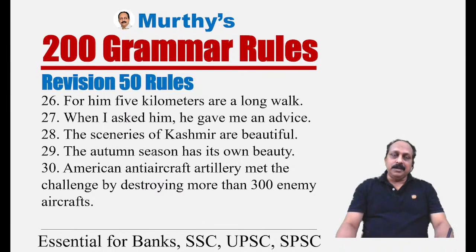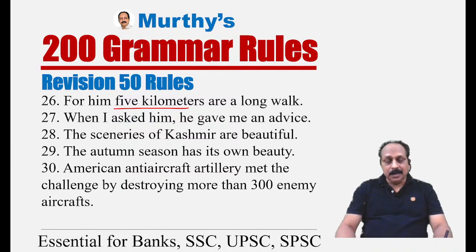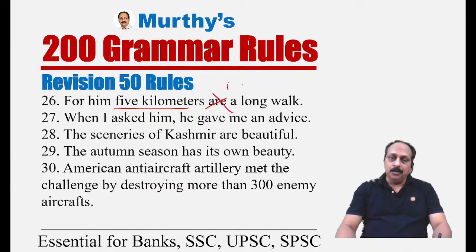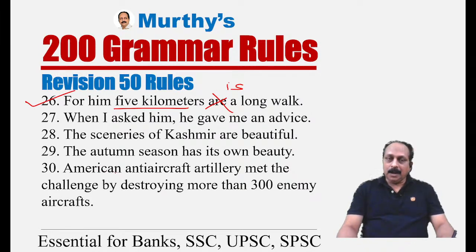Sentence twenty-six: 'For him, five kilometers is a long walk.' When certain nouns — though in plural form — relate to distance, weight, or currency, they are considered a single whole unit. Based on that, they take a singular verb. 'Five kilometers' is considered one unit, so 'is' is correct, not 'are.' Similar logic applies: '200 rupees is spent on groceries.'